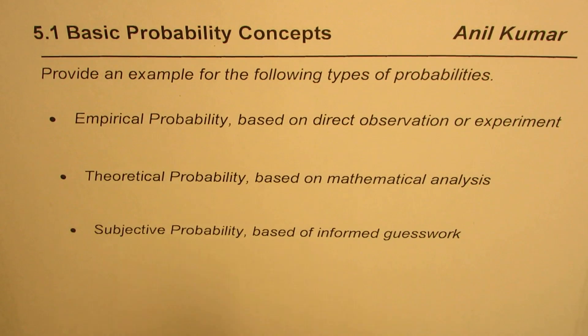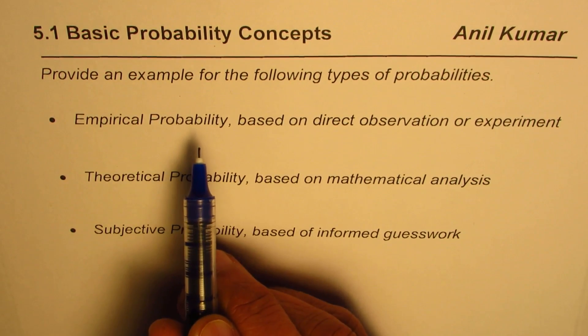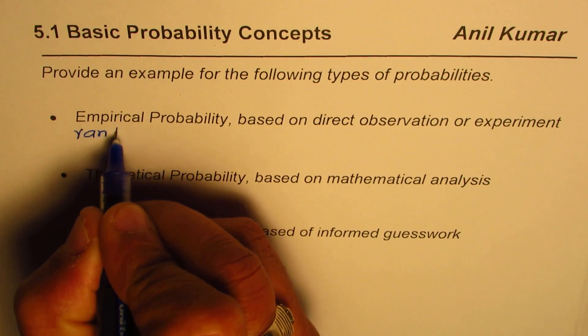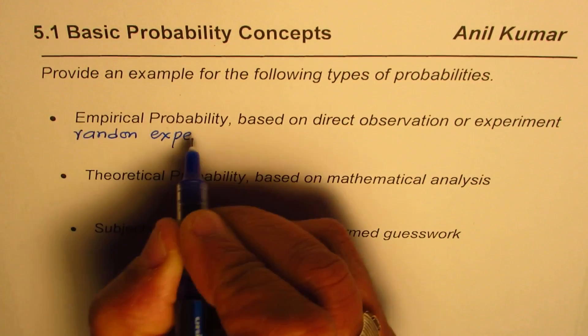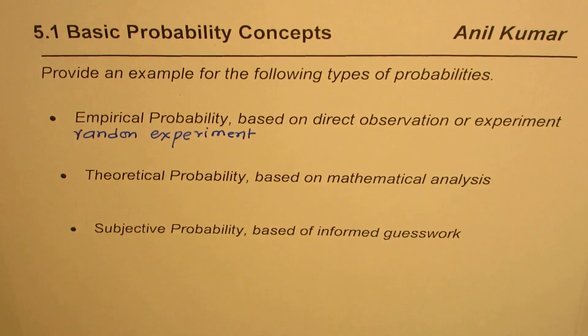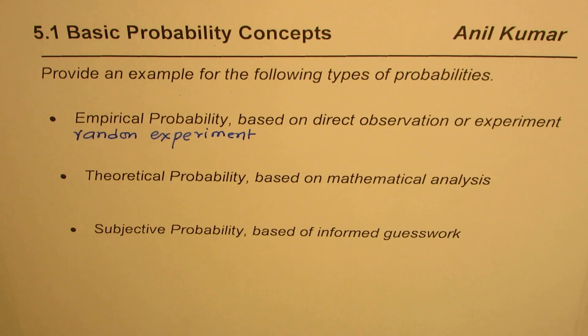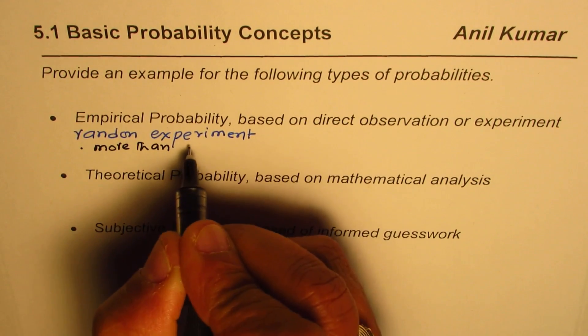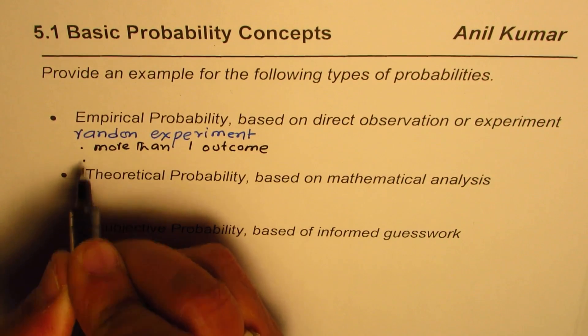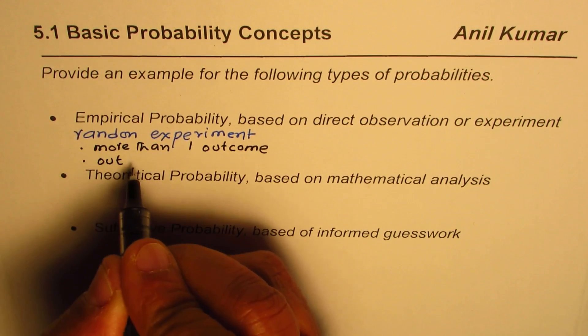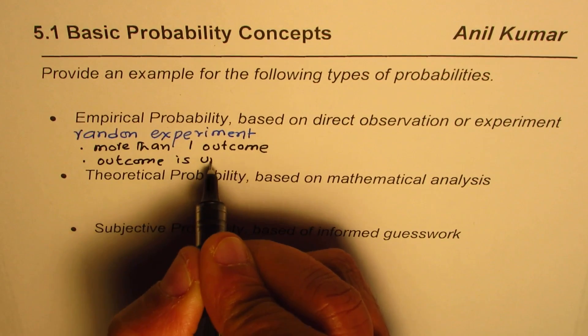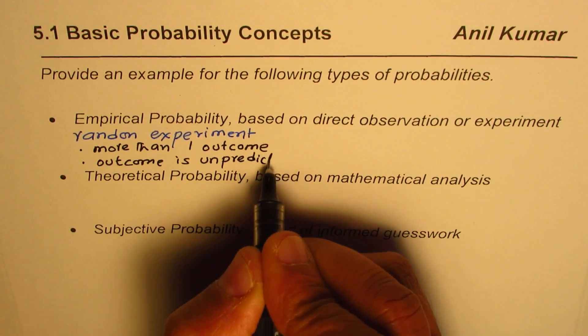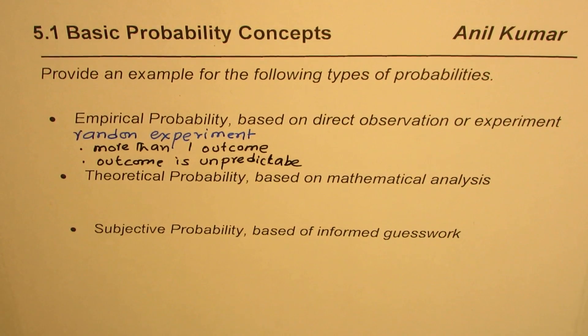Now let's start with the empirical probability. Here to find the probability we need to design a random experiment. When I say random experiment it means that in the experiment which we design we should have more than one outcome and that outcome is unpredictable. You should not know in advance what will be the outcome. So these are two distinguishing features of an experiment.